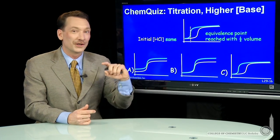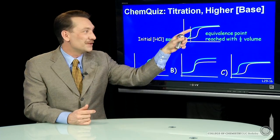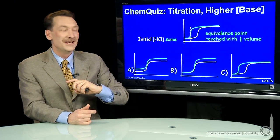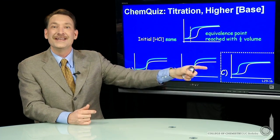So the new pH curve will look like this, an equivalence point twice as early in half the volume. And that's selection C. The correct answer here is C.